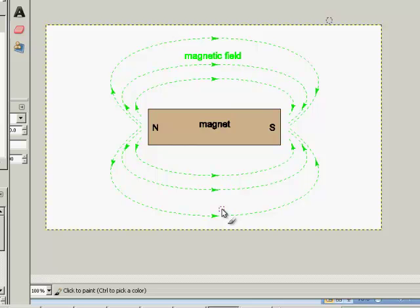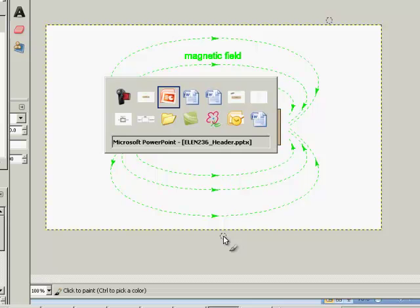So this is sort of the first brush at qualifying and quantifying what's going on in the magnetic field. Now, the next thing to consider is that magnetic fields and electric fields, magnetic circuits and electric circuits, are fairly similar.